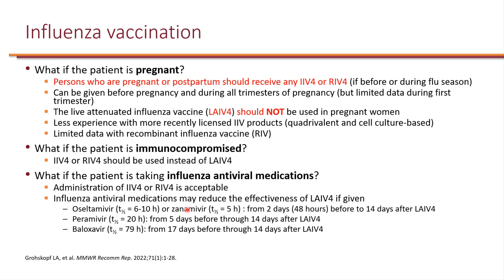The live attenuated influenza vaccine will have reduced effectiveness if Oseltamivir is taken within two days before and up to 14 days after vaccination. If someone is taking Oseltamivir for an infection or prophylaxis and is to receive a live attenuated vaccine, they should wait two days after discontinuing Oseltamivir before vaccination. Once vaccinated, they should wait at least 14 days before receiving another dose of Oseltamivir. The same concept applies to Peramivir and Baloxavir, but the timing is different — five days before and up to 14 days after for Peramivir.